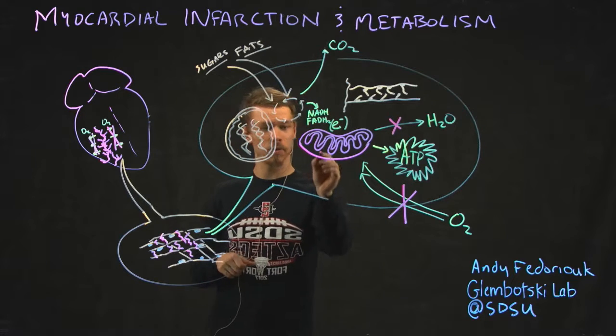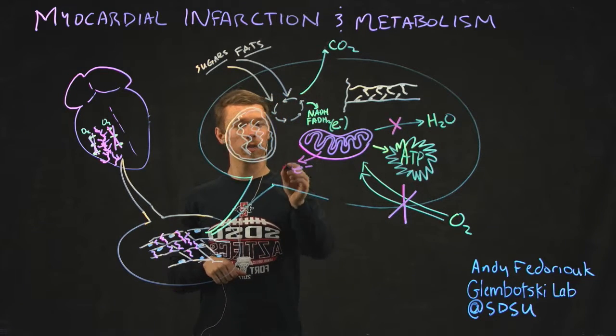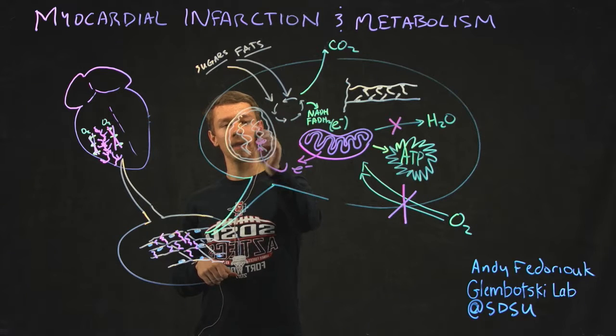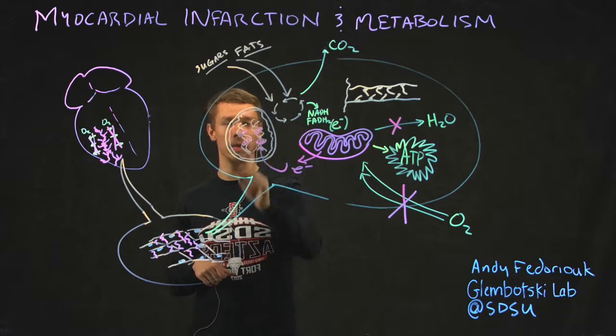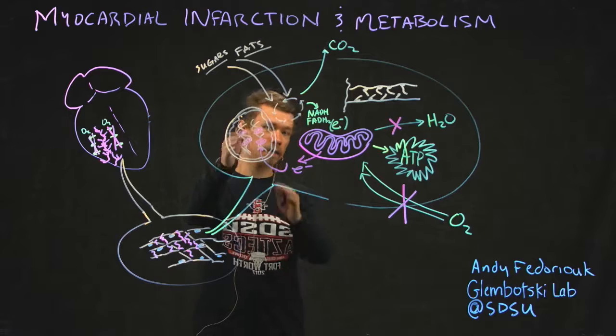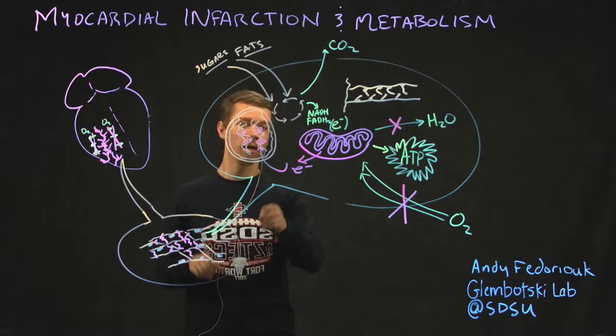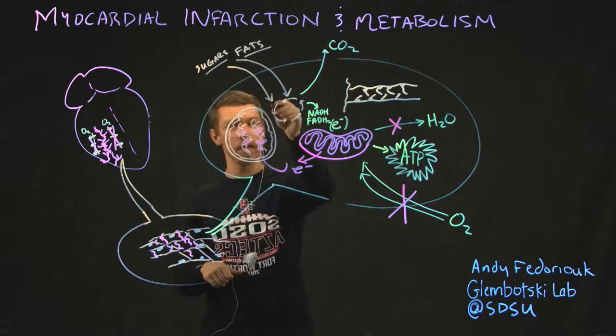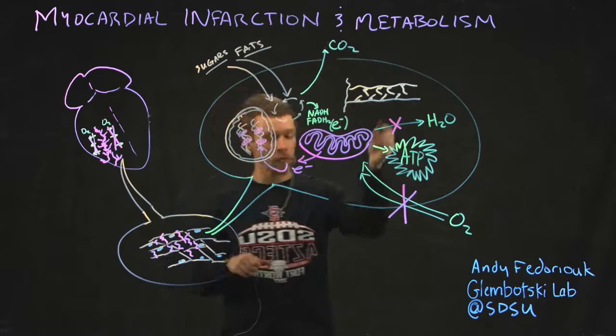What happens is you start leaking electrons, and these electrons start attacking other things, causing lesions, damage. So this is your nucleus. It has DNA. Electrons can come in and oxidize your DNA, which damages the DNA and prevents the DNA from making proteins, for instance.